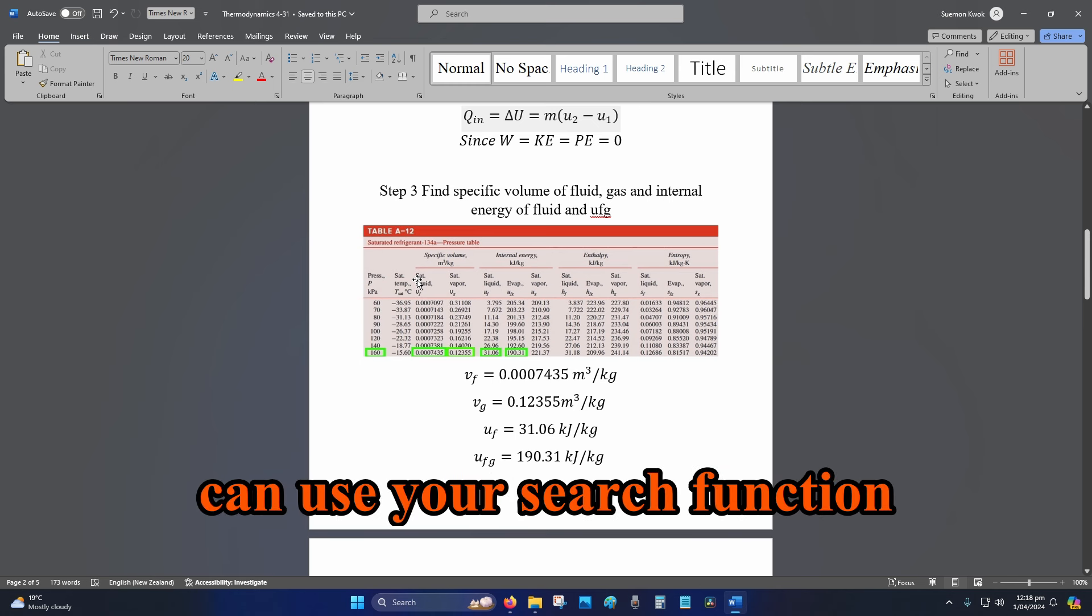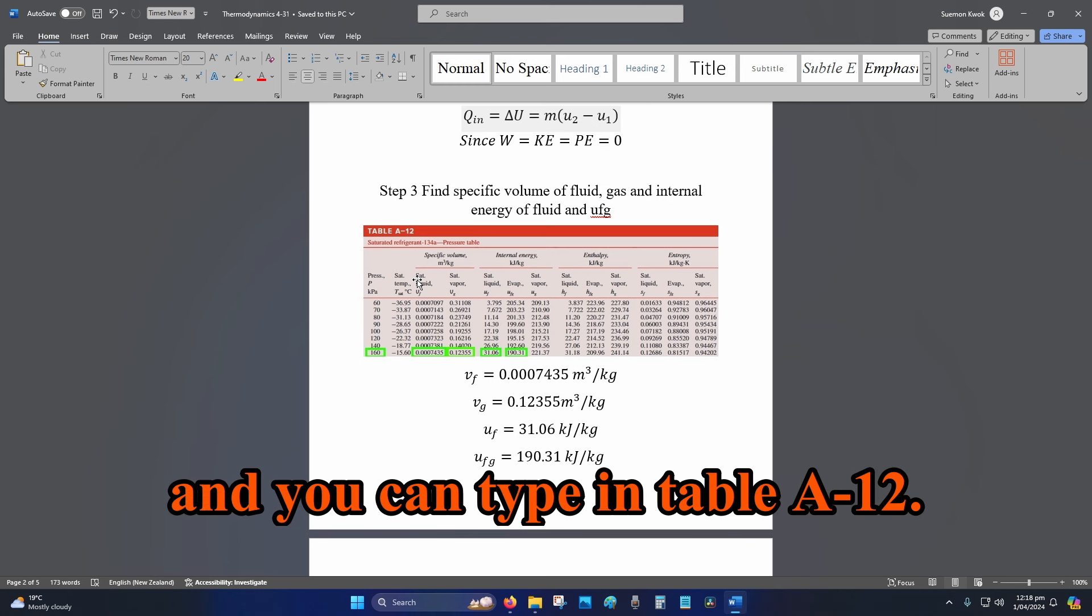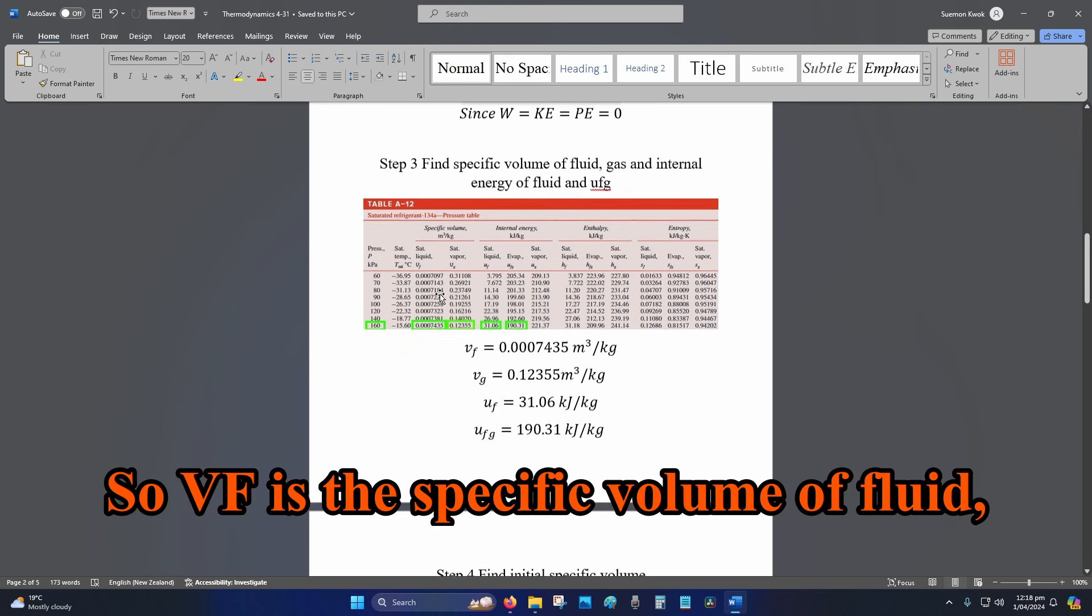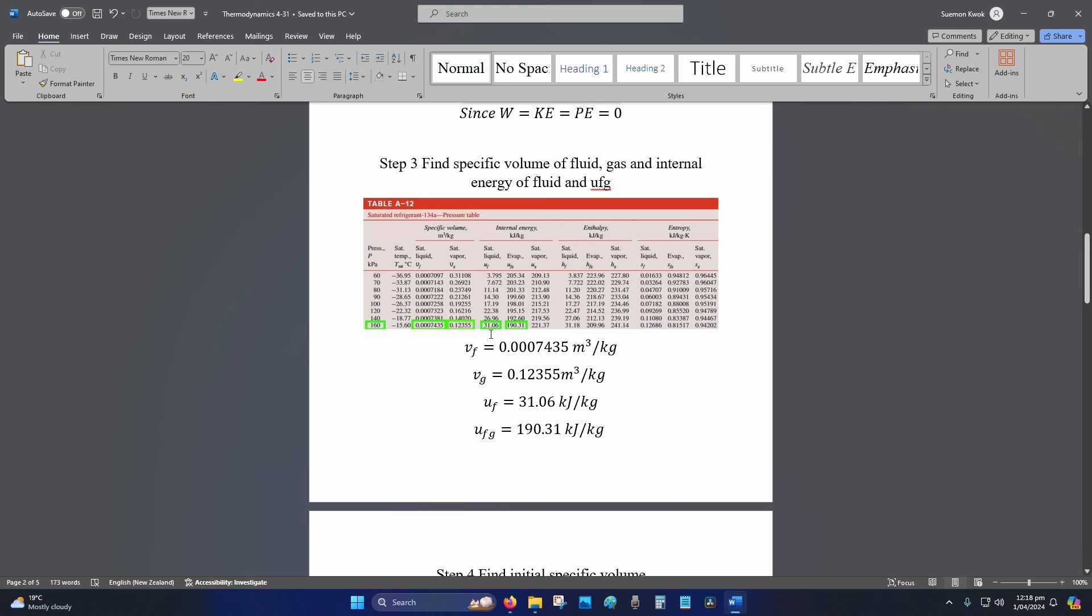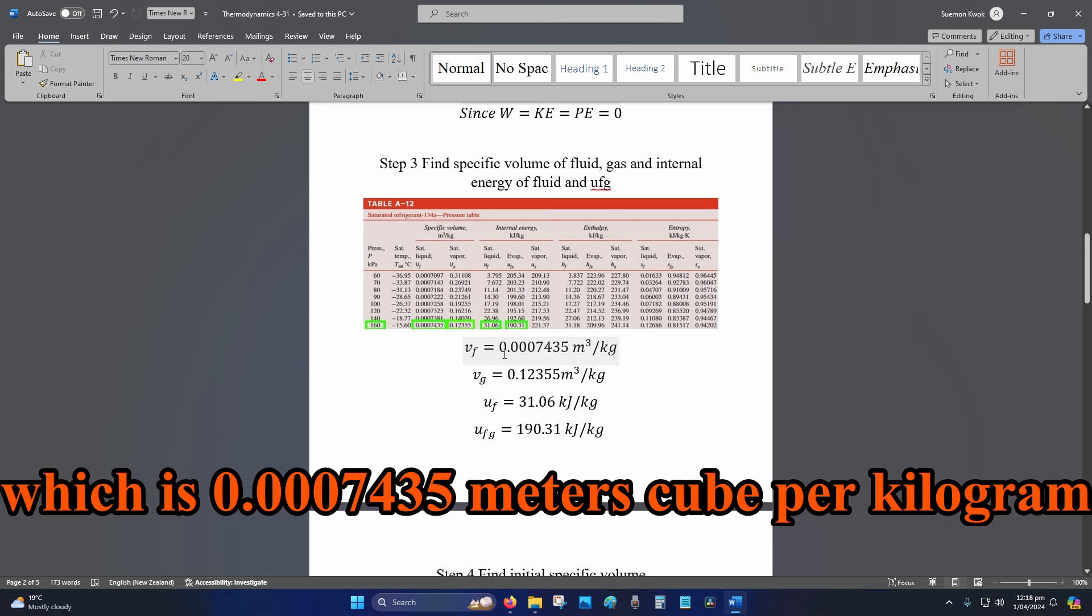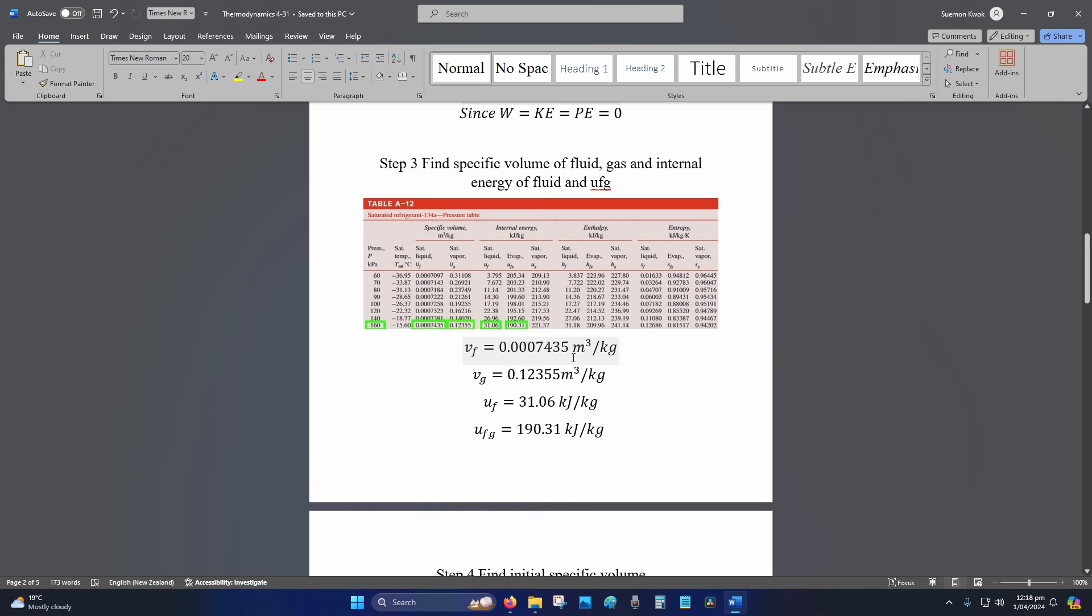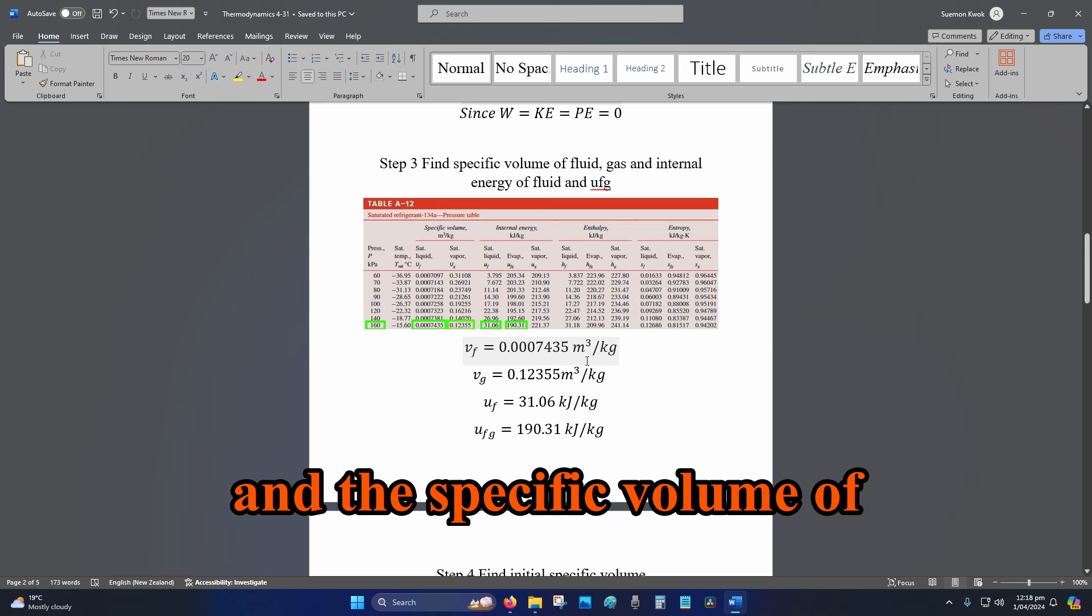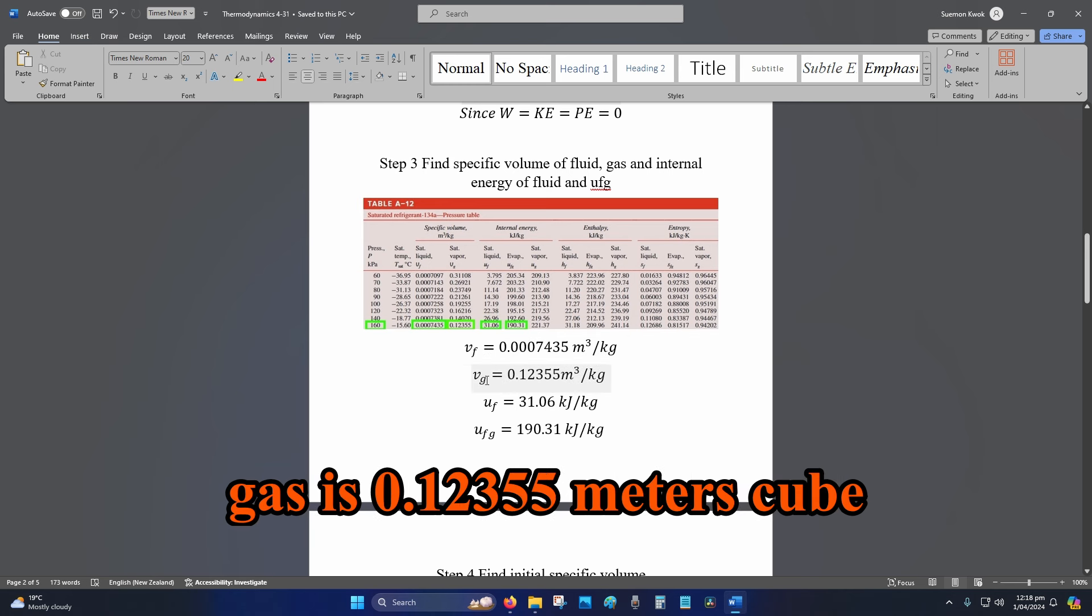If you bought the PDF, you can use your search function and type in table A-12. v_f is the specific volume of fluid, which is 0.0007435 m³/kg, and the specific volume of gas is 0.12355 m³/kg.